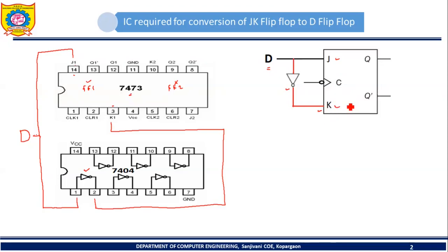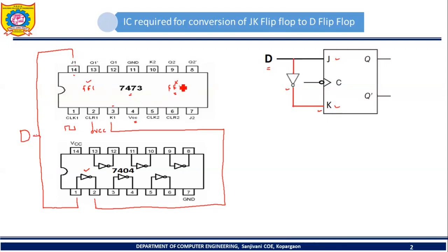Those two connections are now complete. Pin number 1 of 7473 is used to provide the clock pulse to flip-flop 1, so it should be connected to the clock source. Pin number 2 is the clear input, which is active low; since we don't want to use it, it should be connected to VCC. Pin number 4 should also be connected to VCC. Pins 5 through 10 correspond to flip-flop 2; since I am not using flip-flop 2, no connections are needed for those pins.